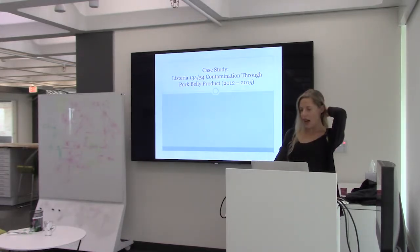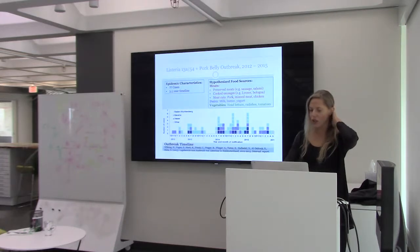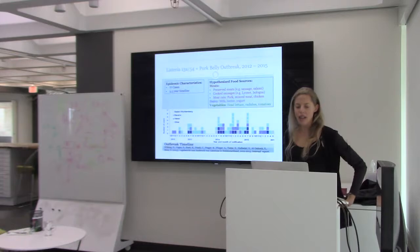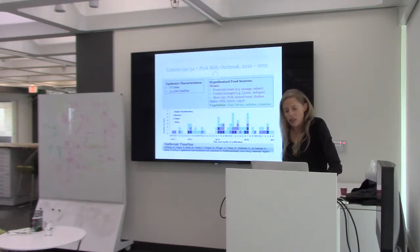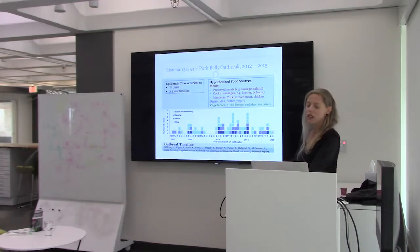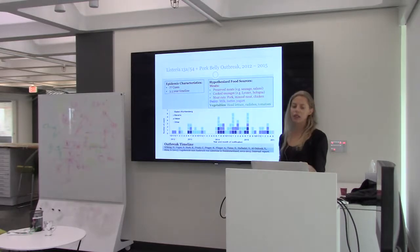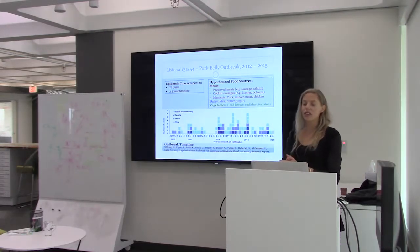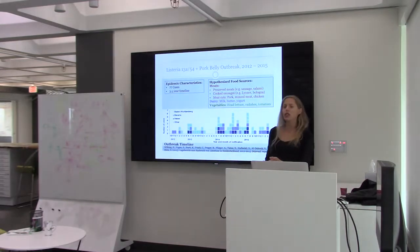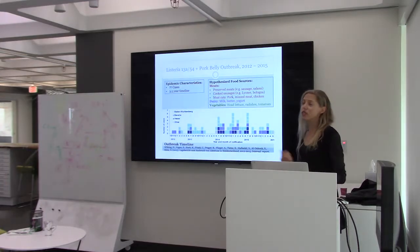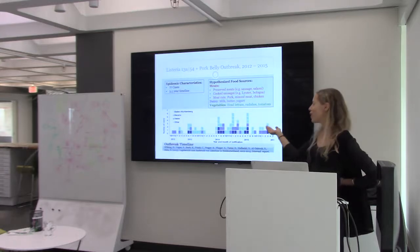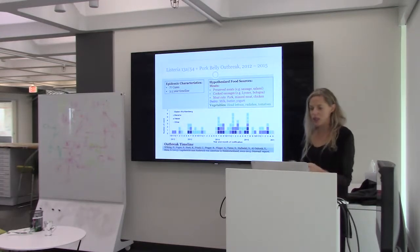Now another case study with a different distribution. This was an outbreak with Listeria and a German product called Vamo — a pork belly product. The Robert Koch Institute wanted us to look at this outbreak because when they were investigating it, there were a large number of possible food items and food item categories they were considering. This was a much longer, ongoing outbreak — three and a half years with a much smaller distribution of 77 cases. Throughout this time, investigators were trying to identify the product through standard epidemiological analysis: interviewing patients on the foods they ate and trying to find statistical overlap and a likely source. There were a large number of products all these people were consuming, and they weren't able to narrow it down based on that analysis.